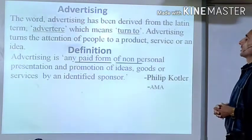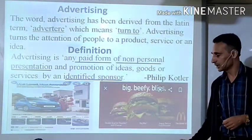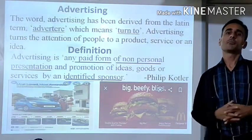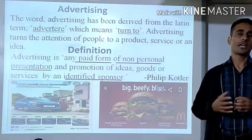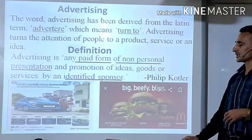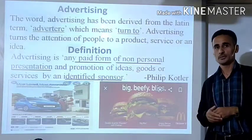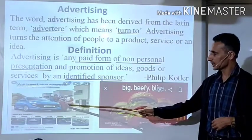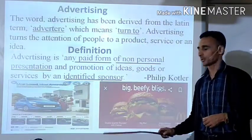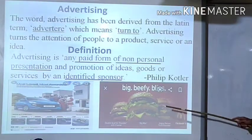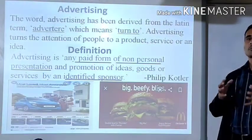A few key points from this definition: First, advertising is any paid form — meaning it has a monetary value; money has to be paid to the advertising media or agency because the advertiser has to buy time or space. Second, it is non-personal presentation — there is no face-to-face contact between the advertiser and the buyer. Third, it has an identified sponsor — for example, an advertisement by Hyundai or McDonald's — we can identify which company is advertising that particular product.